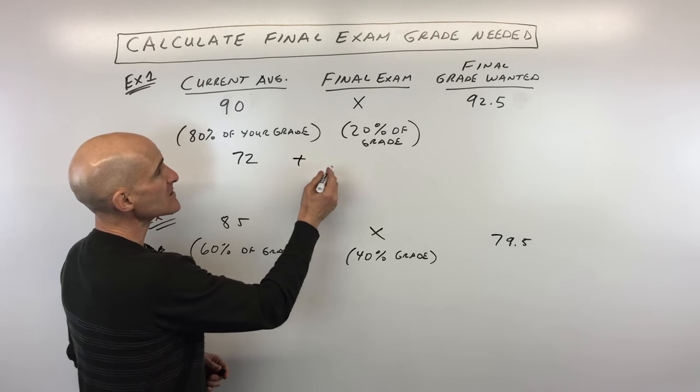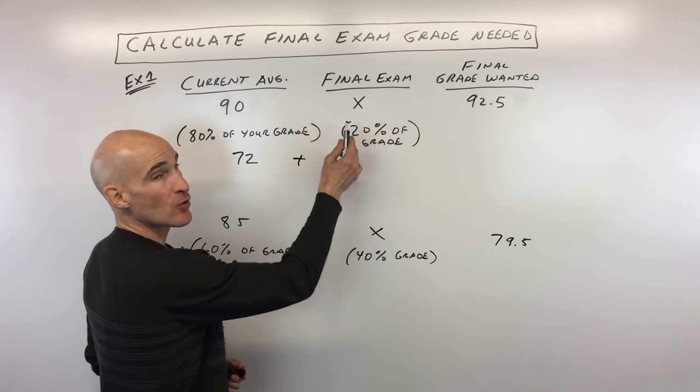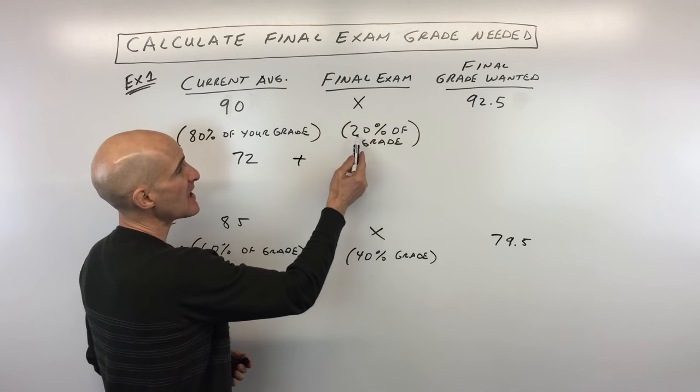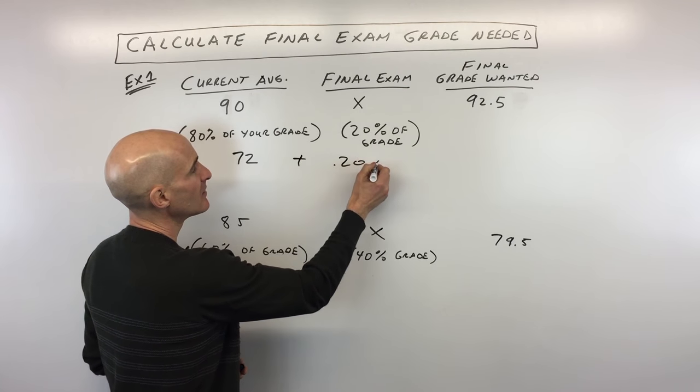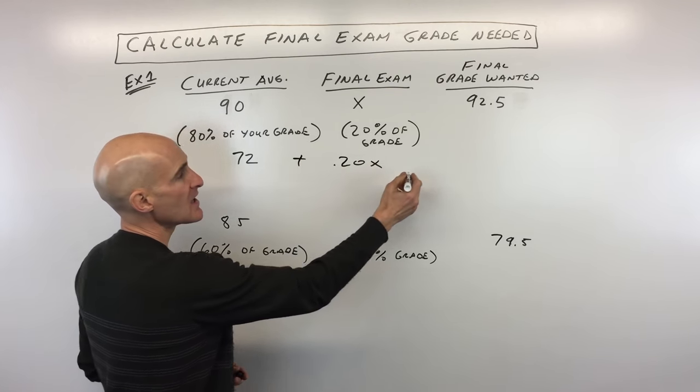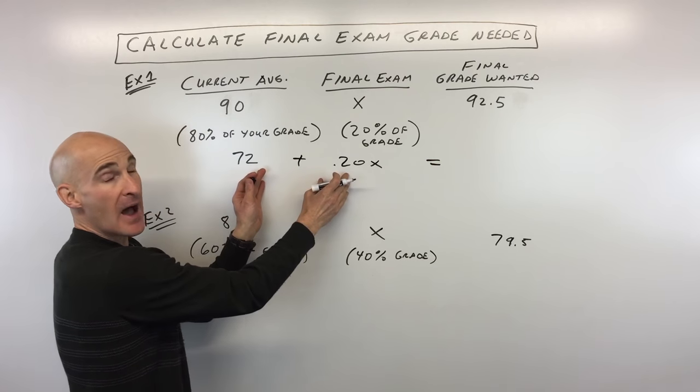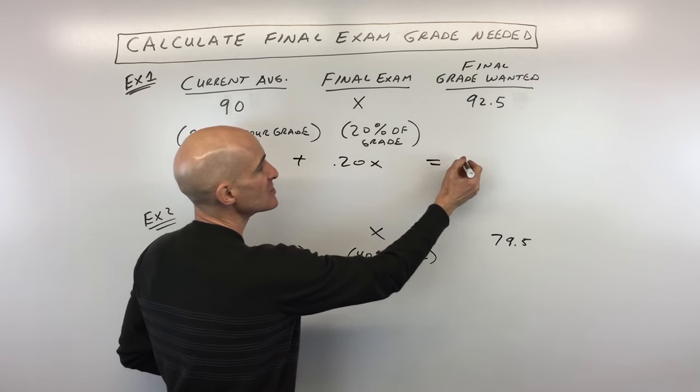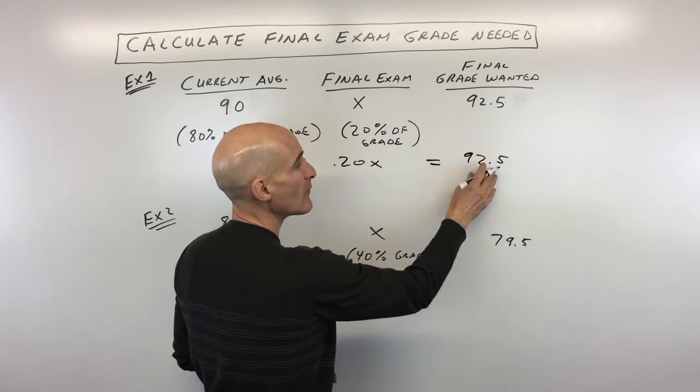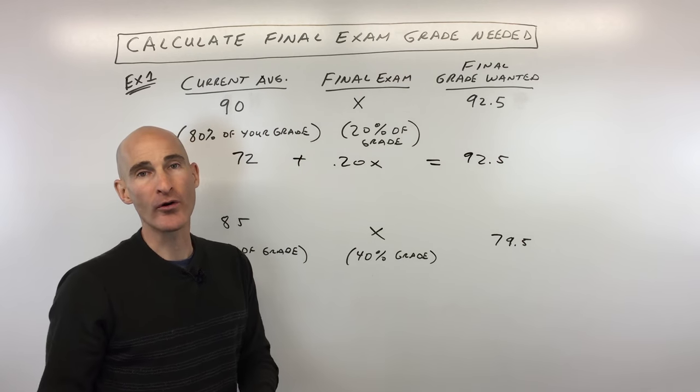Plus, we're going to take your final exam score, which we don't know yet, times 20%, so that's 0.20x. And we want these two combined to add up to 92.5, which is your desired score.